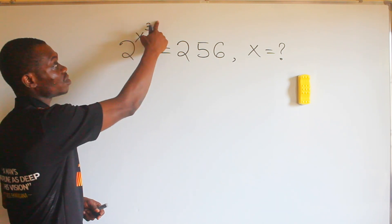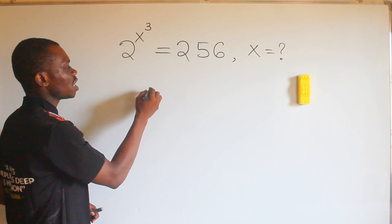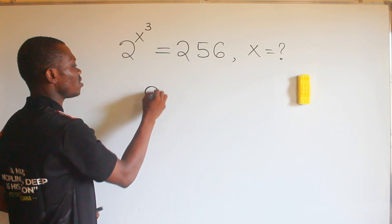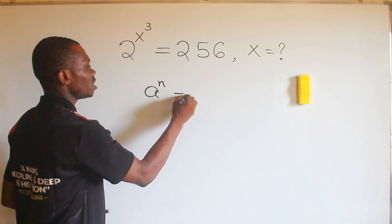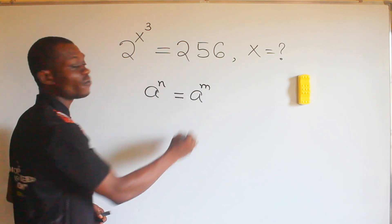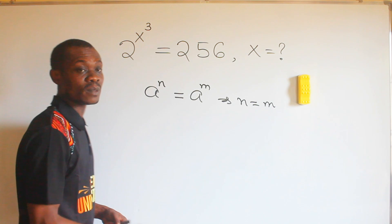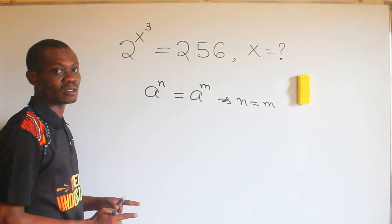Where is it coming from? You recall that one of the rules of indices says that if a raised to the power of n is equal to a raised to the power of m, what it implies is that n is equal to m, so far as your a is not 1.